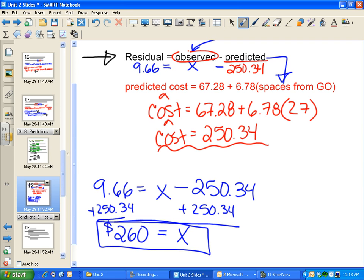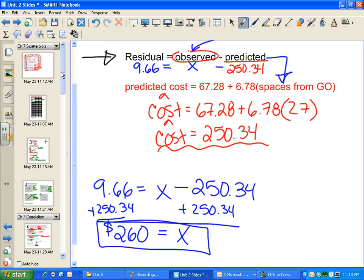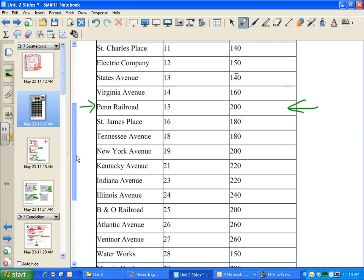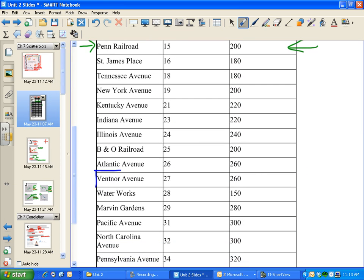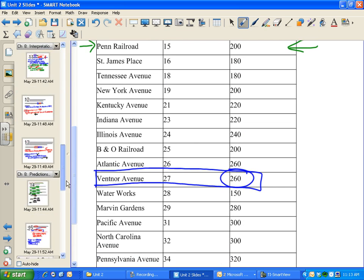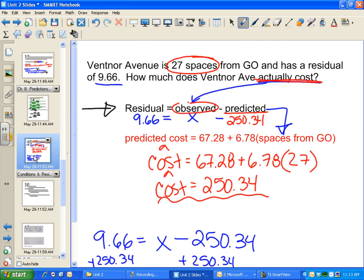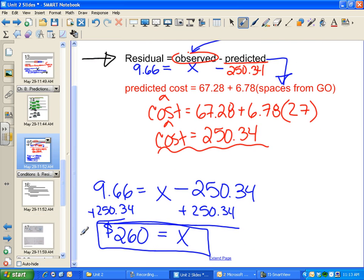Some of you might think that was too much work—we could have just looked at the data. You're right, but in some situations you won't have the data. Let's verify. Going back to our data set, this was Ventnor Avenue, 27 spaces from GO. The actual observed real-life cost is $260, which is exactly what we calculated using our residual formula.